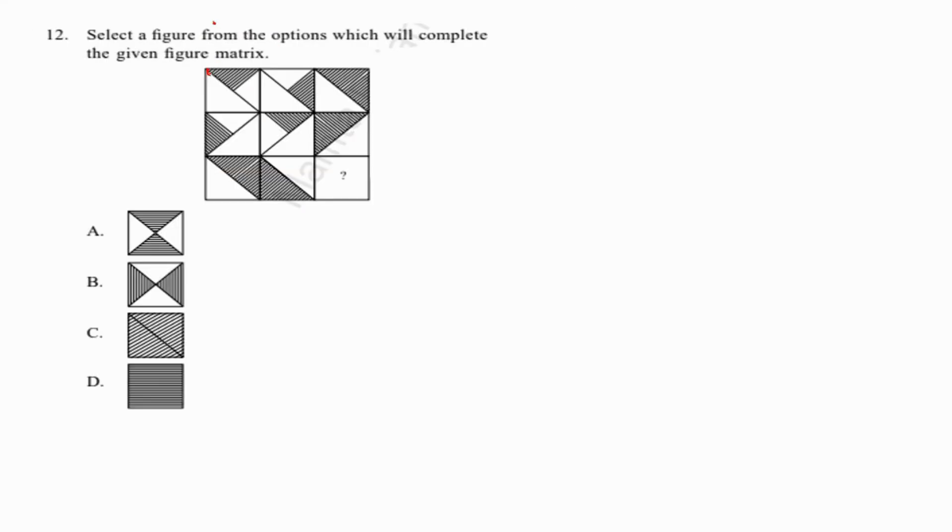Again a figure matrix which shows a pattern. Half shaded, half shaded, combining these two gives full shaded. This is half, half, so combining these two would be a full rectangle shaded. Option C is the answer.